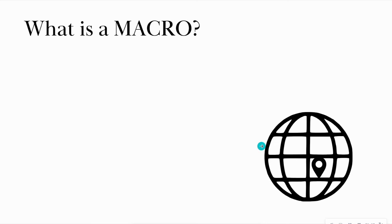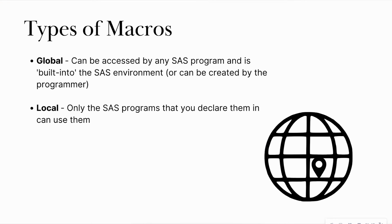There are two main types of macros: global and local. Global macros can be accessed by any SAS program. If you open up a SAS program right now on your computer, you would have access to global macros that are built inside the SAS environment — things like host name, the day of the week, and the time that you run a report. Local macros are pretty custom — those are macros that you make within a SAS program and you're only able to use them within that single SAS program.